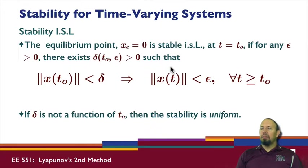Now what about time-varying systems? Well, for a time-varying system, an equilibrium point at the origin is stable in the sense of Lyapunov at time t equals t0.